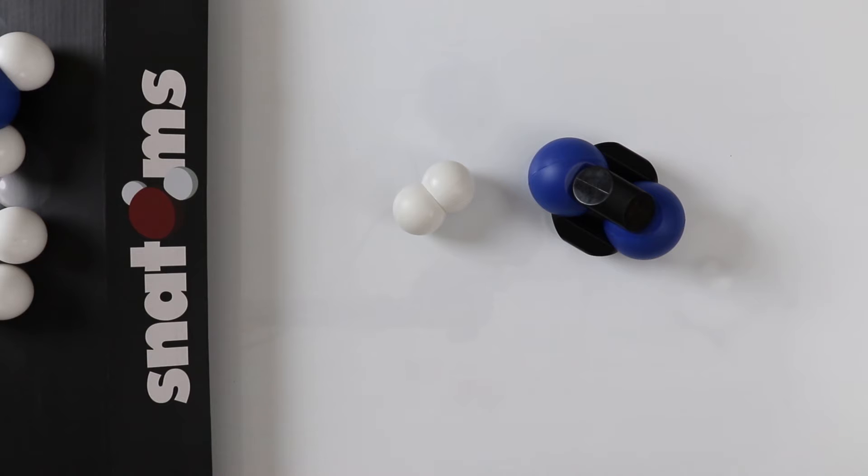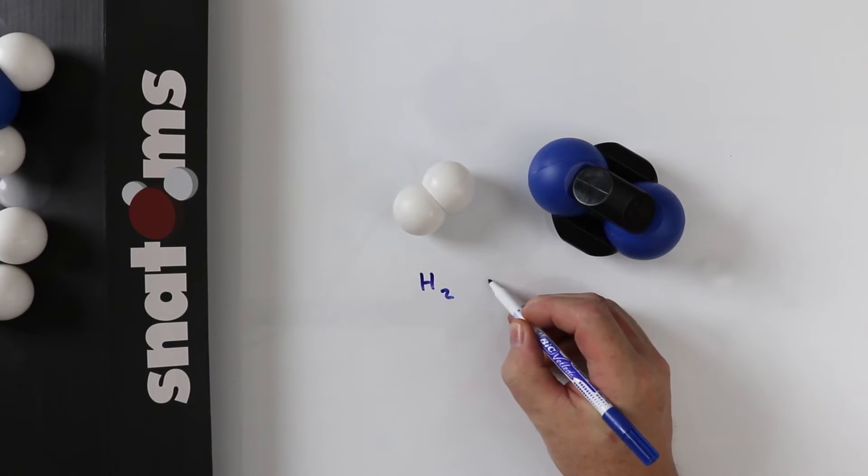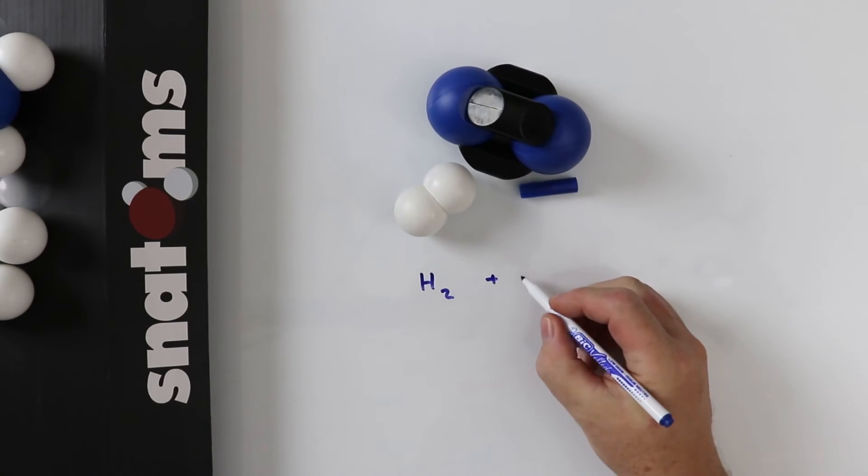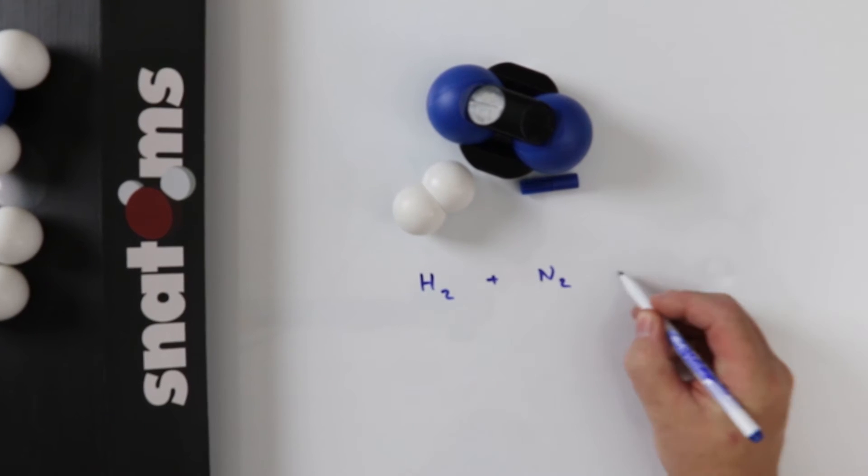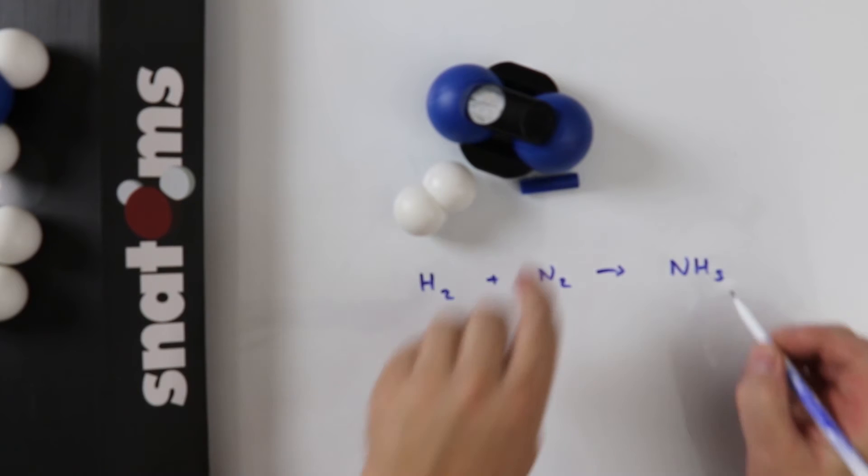We start off with one molecule of hydrogen reacting with one molecule of nitrogen. We write down the equation so we can balance it. Hydrogen plus nitrogen gives us ammonia.